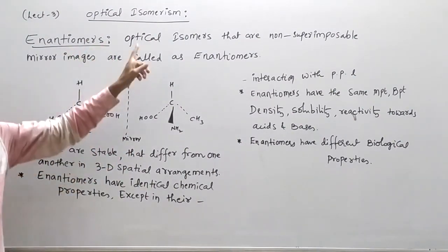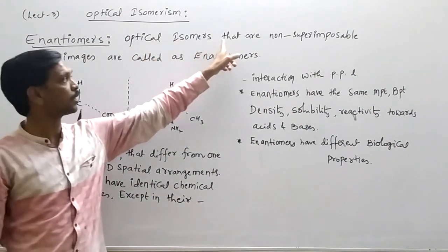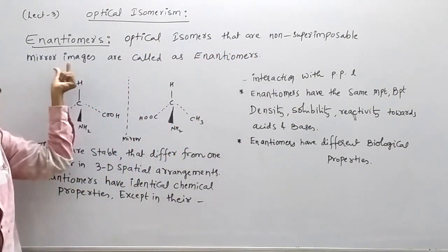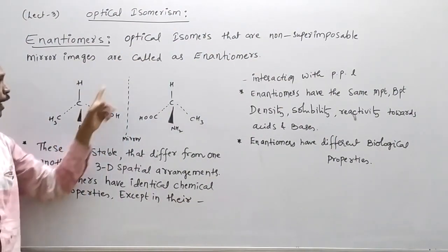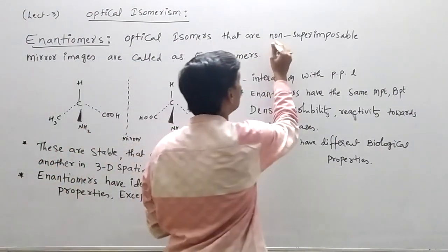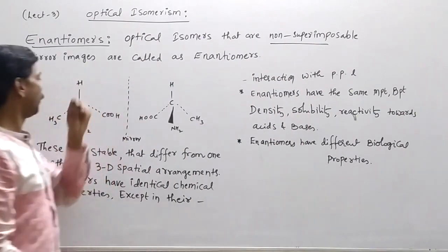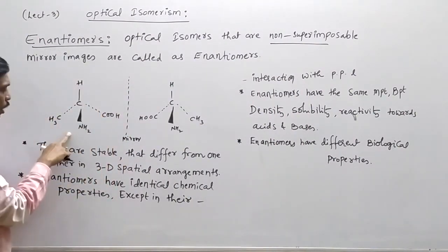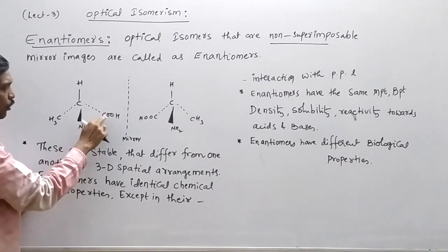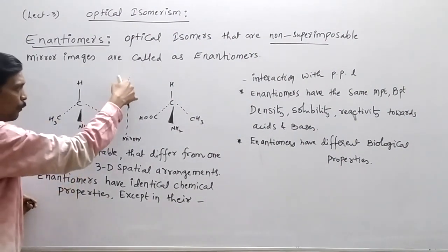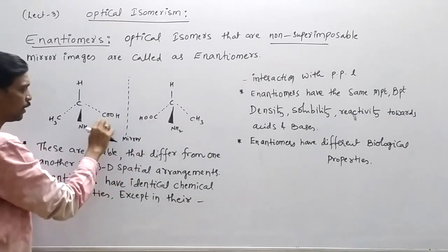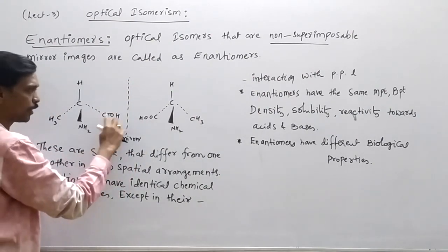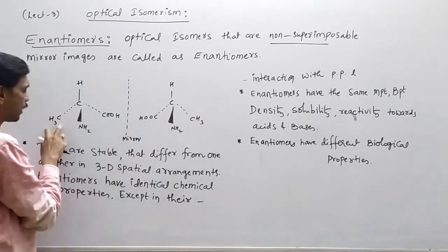Now what are enantiomers? Optical isomers that are non-superimposable mirror images are called as enantiomers. They are non-superimposable mirror images. Here we have an example: CH3CH, NH2COOH. If you have mirror images, this is the right side, this is the left side.